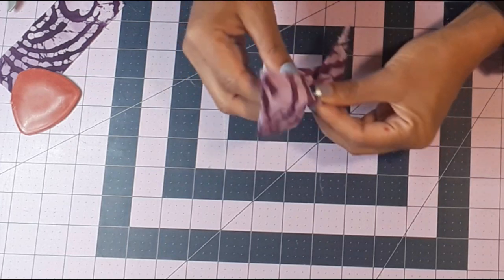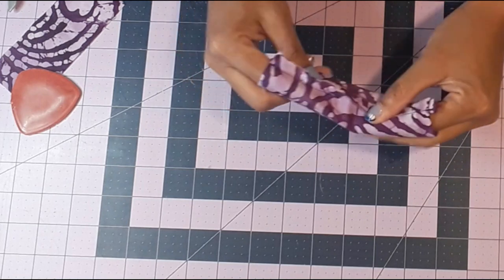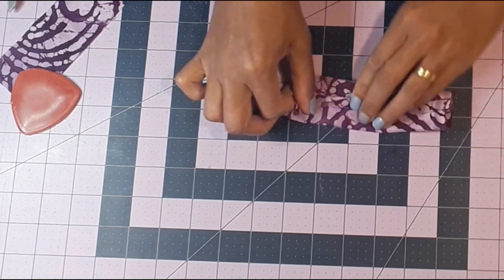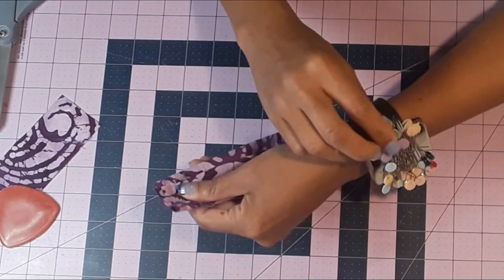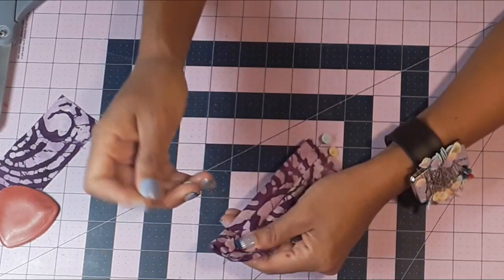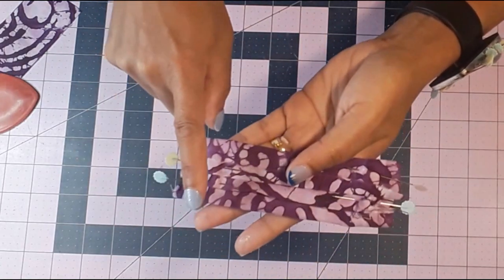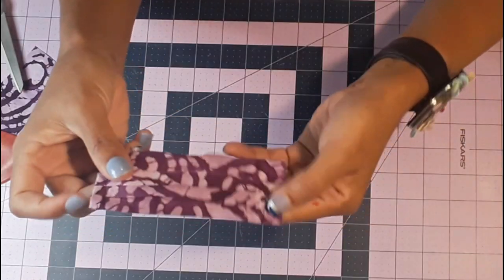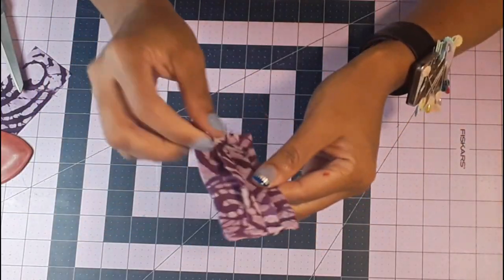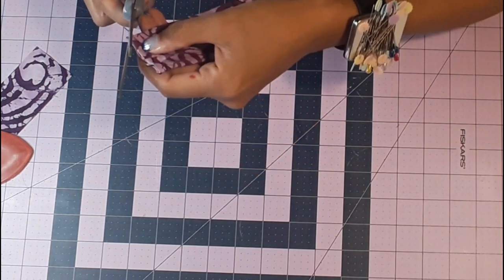We're going to sew or stitch on the two edges and open your seam allowance. It will make the bow look more flat and nice. Now we're going to cut our corners and flip it inside out or turn it inside out.